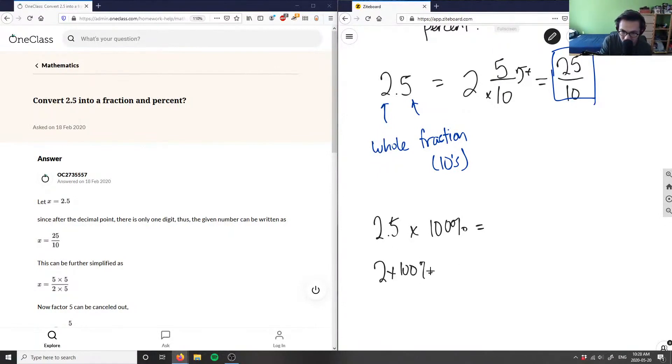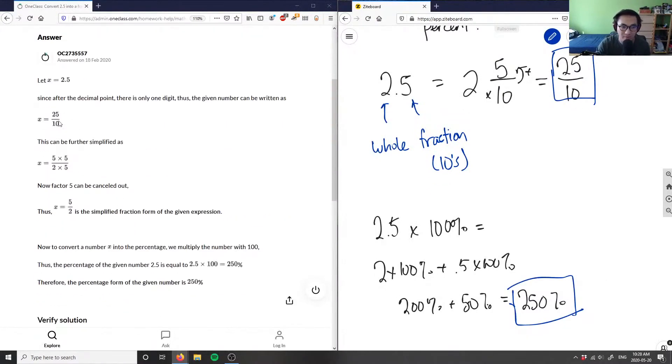So this is 50, which is going to equal 200 plus 50 here is 250. And this here is our solution. Yeah, this is the answer to the question here. So 25 over 10 is in the fraction form. And as you can see, this is 25 over 10, which is great. And then 250 is the percentage form.